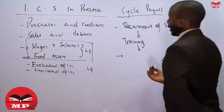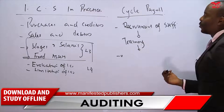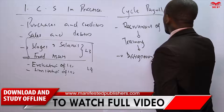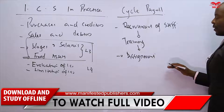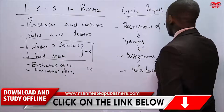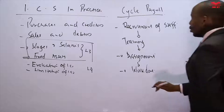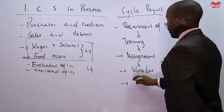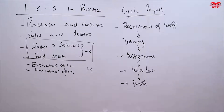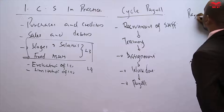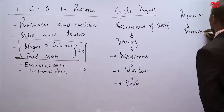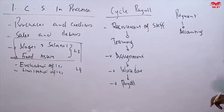After training comes assignment — we assign staff to their respective areas of operations. Once staff are assigned, we collect the details of work done. From the work done, we generate the payroll, then we make the payment of salaries and wages, and finally we do the accounting. That completes the payroll cycle.